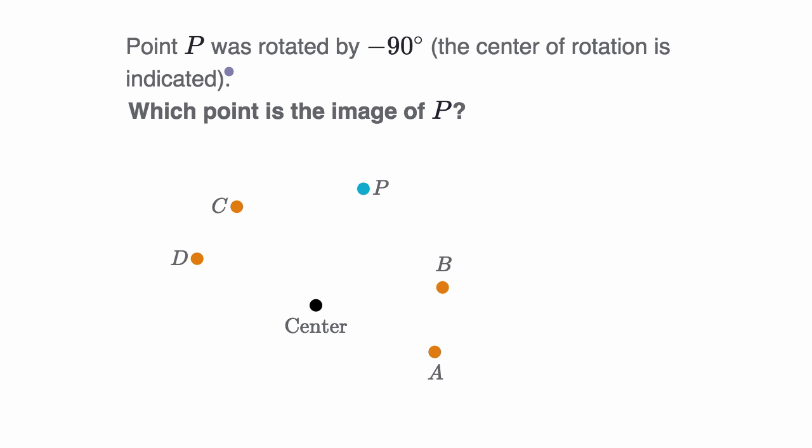So we're told point P was rotated by negative 90 degrees. The center of rotation is indicated. Which point is the image of P? So once again, pause this video and try to think about it.